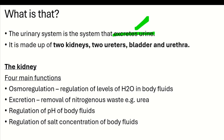The urinary system is made up of two kidneys, two ureters, a bladder, as well as the urethra. Please take note of this — if they ask what makes up the urinary system, you have to be specific: two kidneys, two ureters, a bladder, and a urethra.